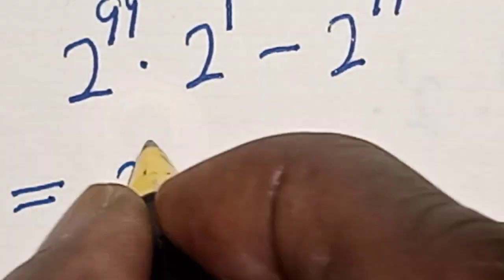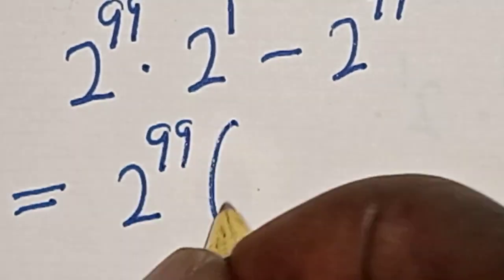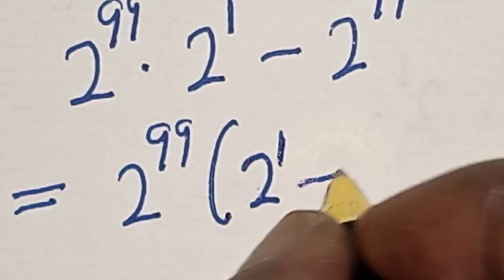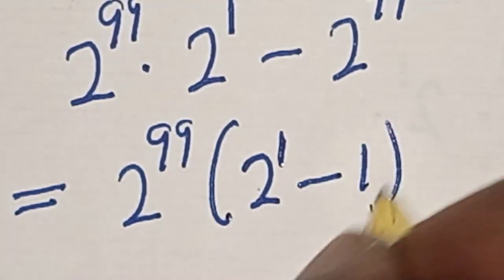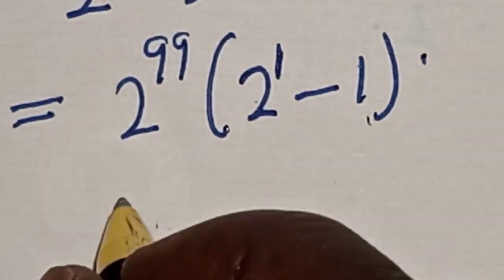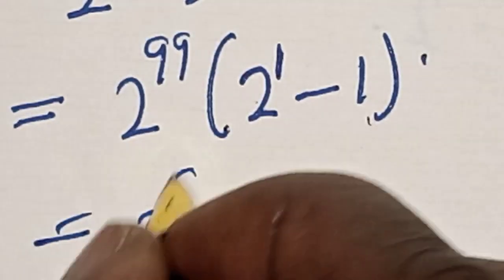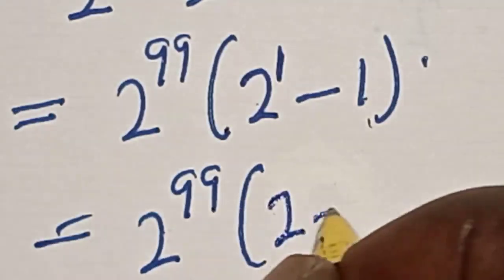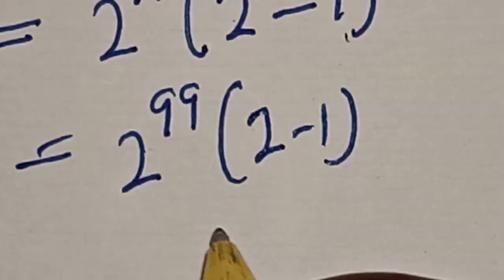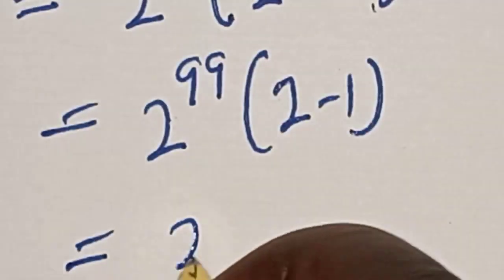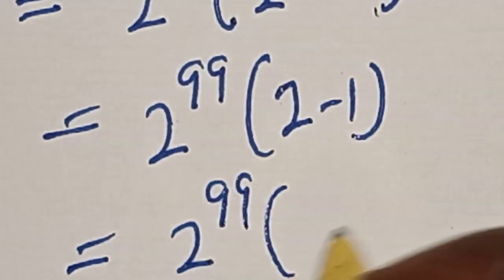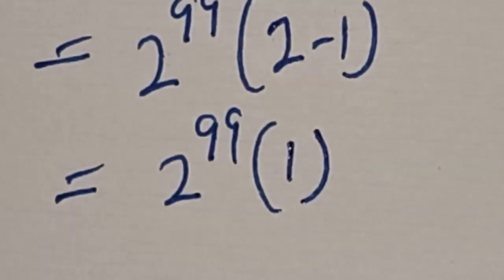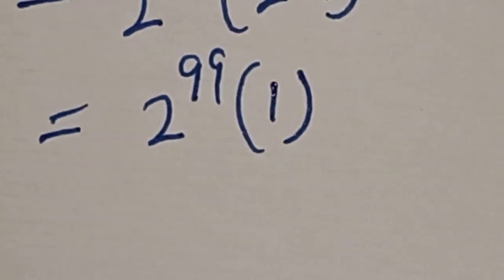Then this is equal to 2 raised to power 99 into 2 raised to power 1 minus 1. Now let's see — 2 raised to power 99 into 2 raised to power 1 is 2, minus 1. Then this is equal to 2 raised to power 99 into 2 minus 1, which is 1.